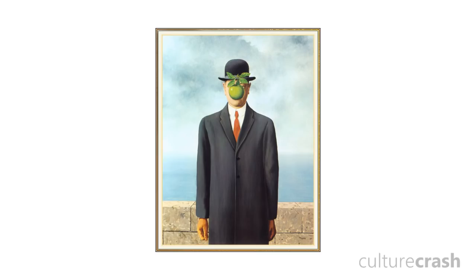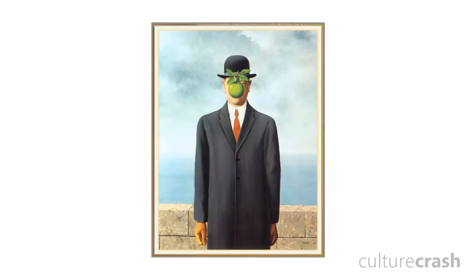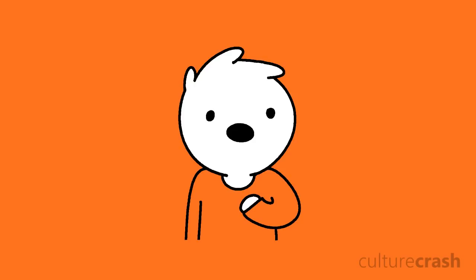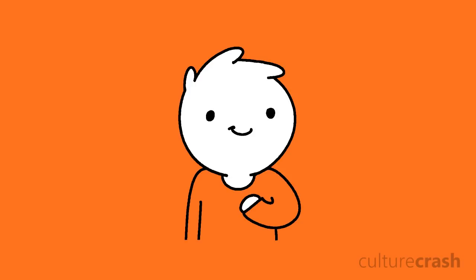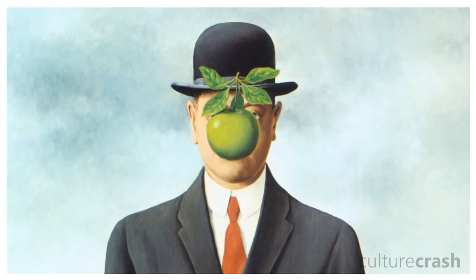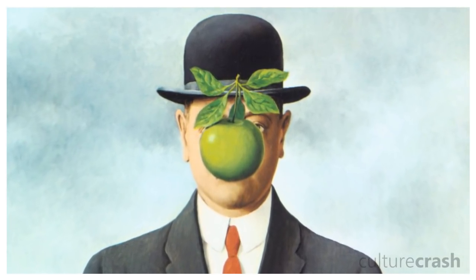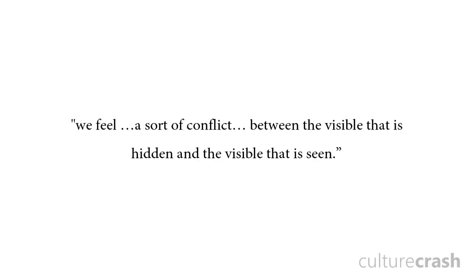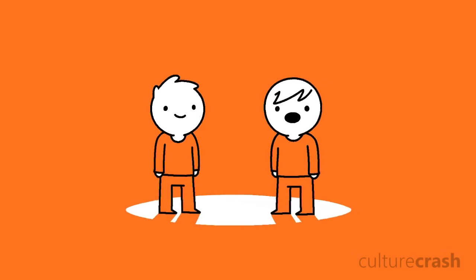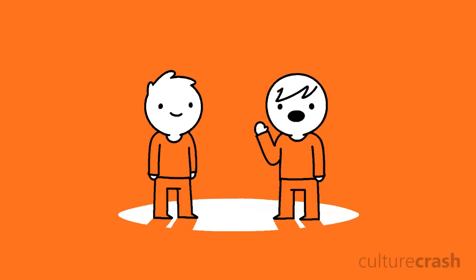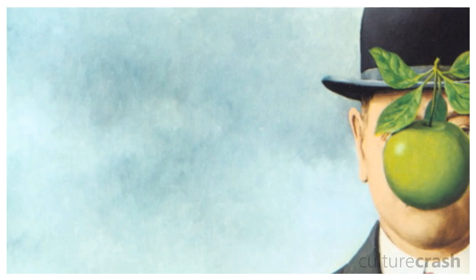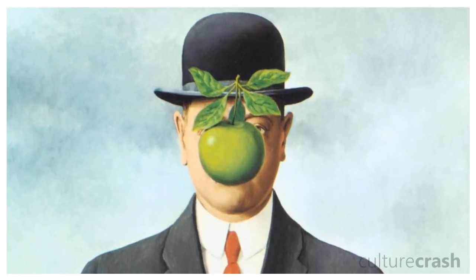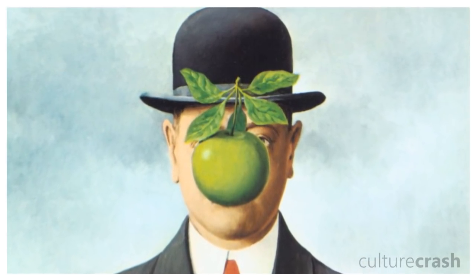Number 8: The Son of Man by René Magritte. The Son of Man is an oil-on-canvas painting by Belgian surrealist René Magritte painted in 1964. Magritte's painting takes the self out of self-portrait by almost entirely covering his face with a mysteriously floating green apple. The painting invites curiosity — as the viewer, we desperately want to see behind the apple. For some reason, those things that are hidden intrigue us most. As Magritte puts it, we feel a sort of conflict between the visible that is hidden and the visible that is seen.